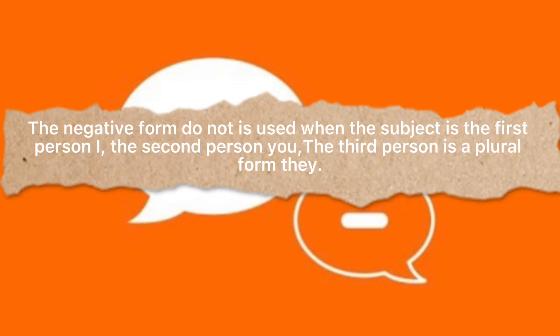The negative form 'do not' is used when the subject is the first person I, the second person you, and the third person in a plural form: they.